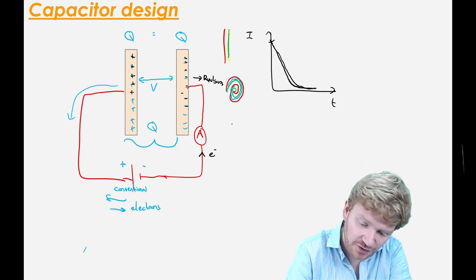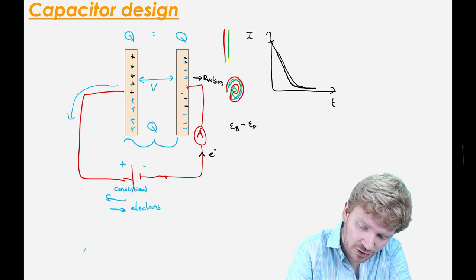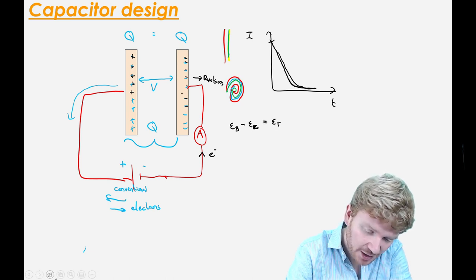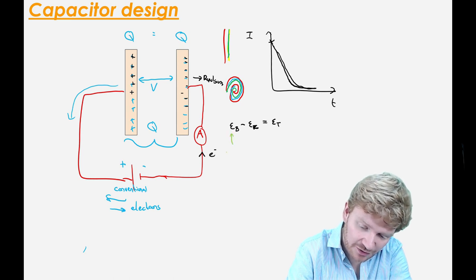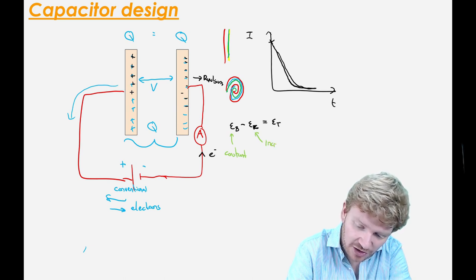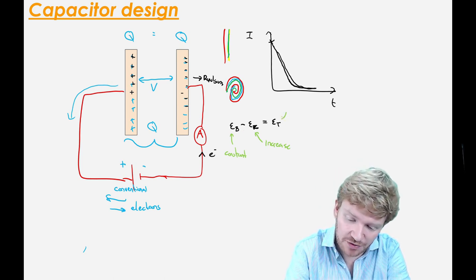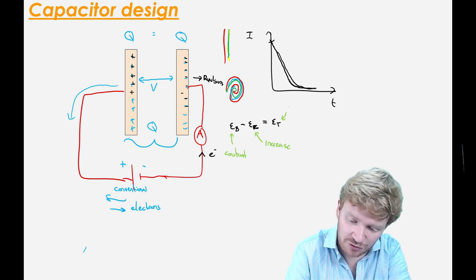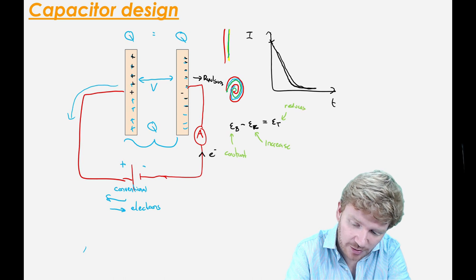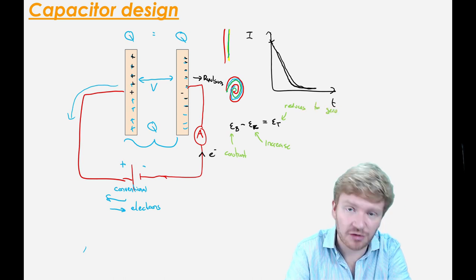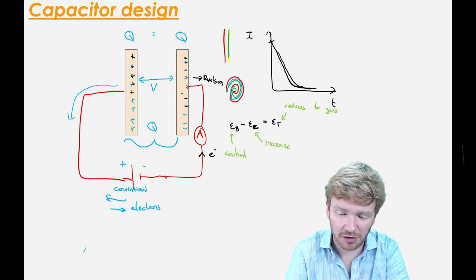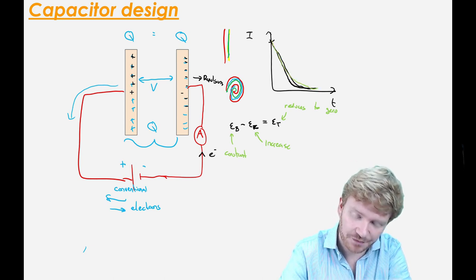I could talk about that in terms of EMF. The EMF of the battery minus the EMF of the capacitor is equal to the total EMF. The EMF of the battery is always constant, but the EMF of the capacitor increases. So the effective EMF driving current around the circuit reduces over time to zero. When the EMF drops to zero, my current drops to zero. I get this classic decay curve.